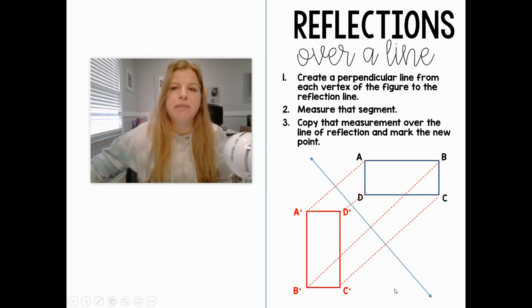These are all perpendicular lines. The distance from the line to the point is the same as the distance from the line to my prime point on each one.